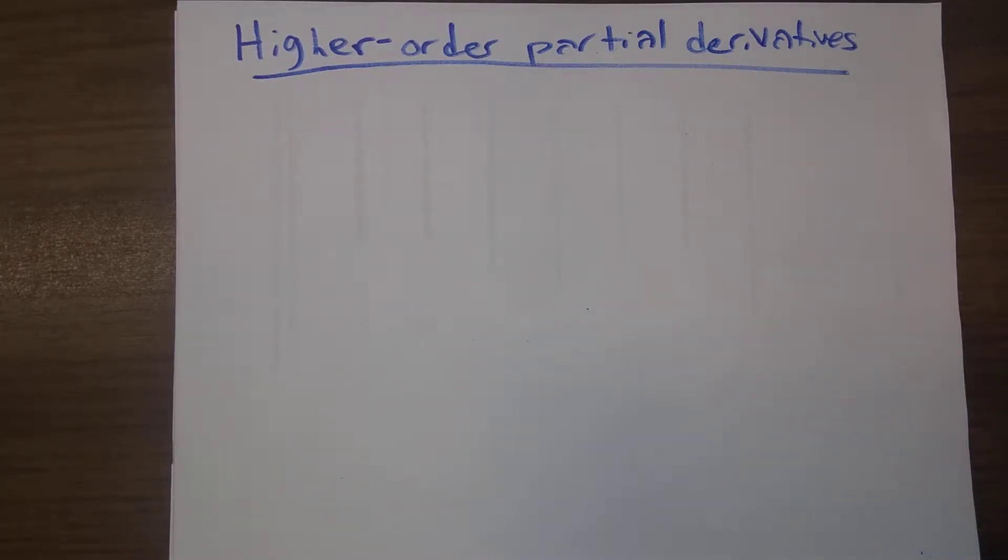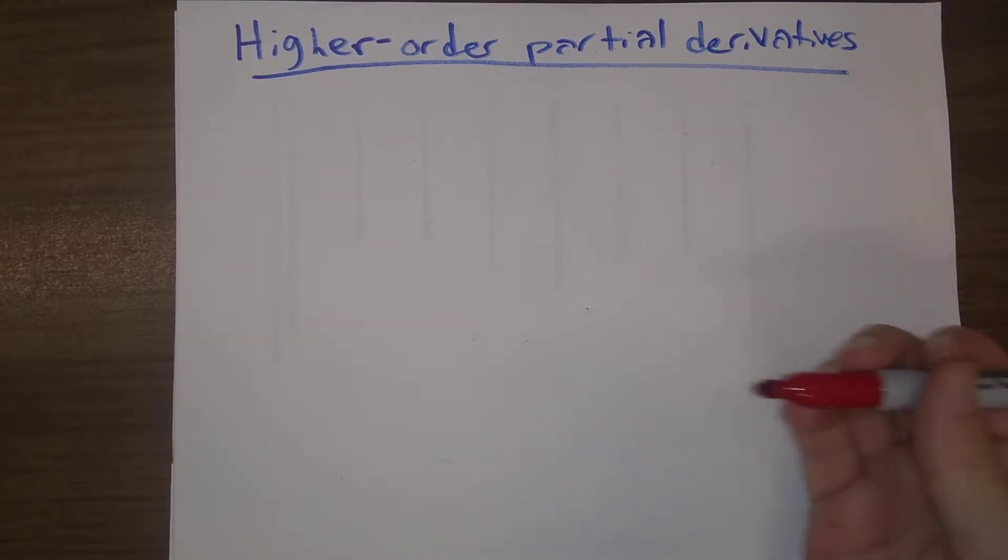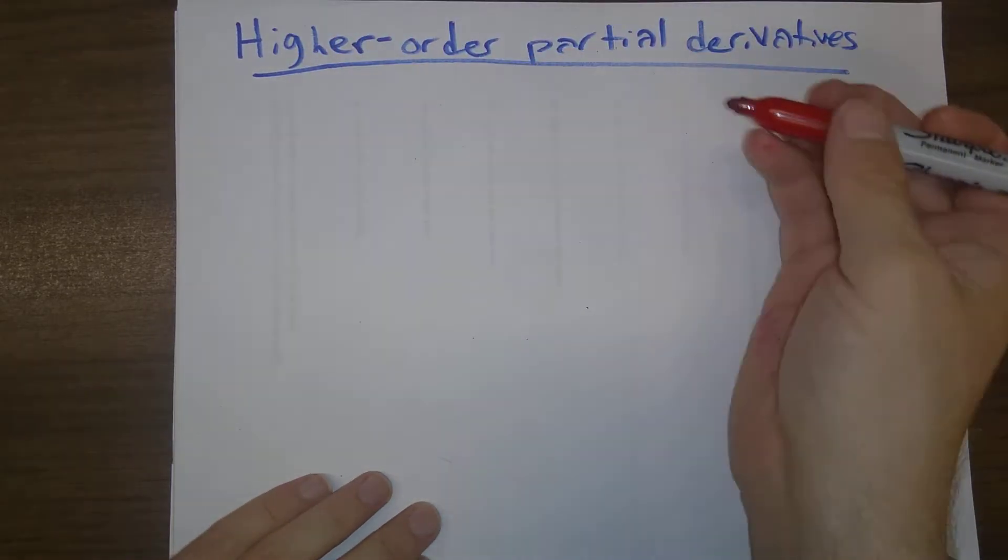For example, there are certain second derivatives tests that tell us information about concavity of functions in Calculus 1. And so, as it turns out, we have the corresponding notion of higher-order derivatives for these partial derivatives here.